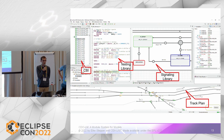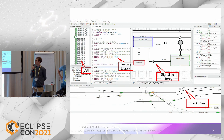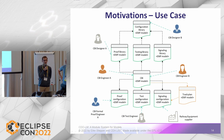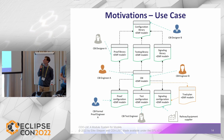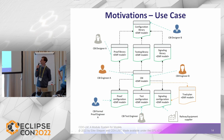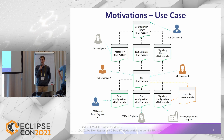The simulation runs using all those models altogether. When you do real modeling for real cases, you end up with a model for the CBI that depends on many other modeling artifacts — proof libraries, testing libraries, signal libraries, and so on. It's a super complex system relying on many people with particular expertise: CBI designers, CBI engineers, testers, proof engineers, and also external companies contributing artifacts that are supposed to refer to each other.